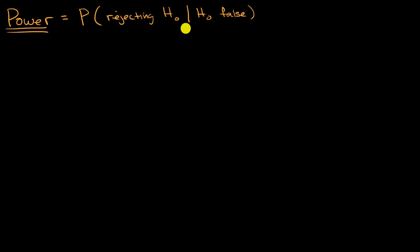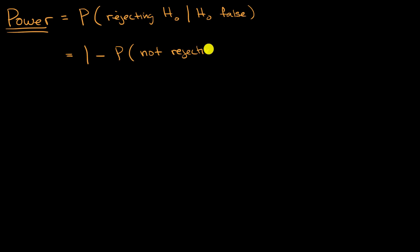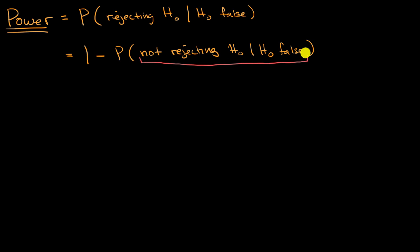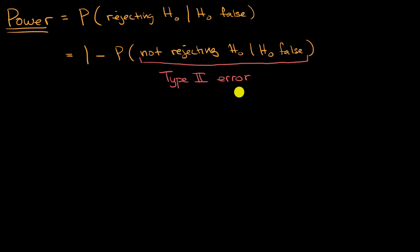There are other ways to conceptualize power. We can connect it to type two errors. You could say power is equal to one minus the probability of not rejecting the null hypothesis, given that the null hypothesis is false. Not rejecting the null hypothesis when it is false — that's the definition of a type two error. So you could view power as the probability of not making a type two error, or one minus the probability of making a type two error.